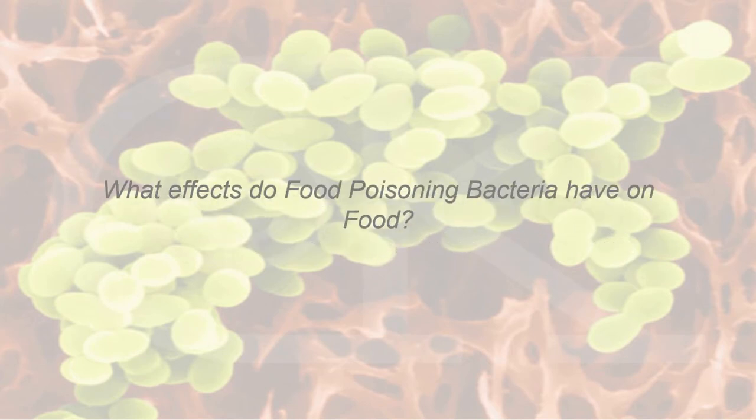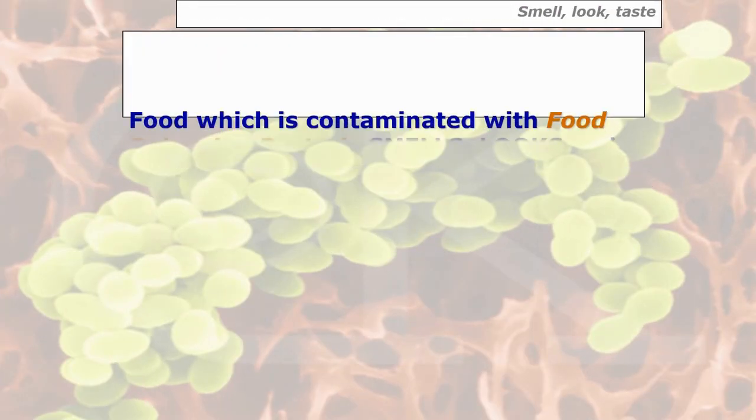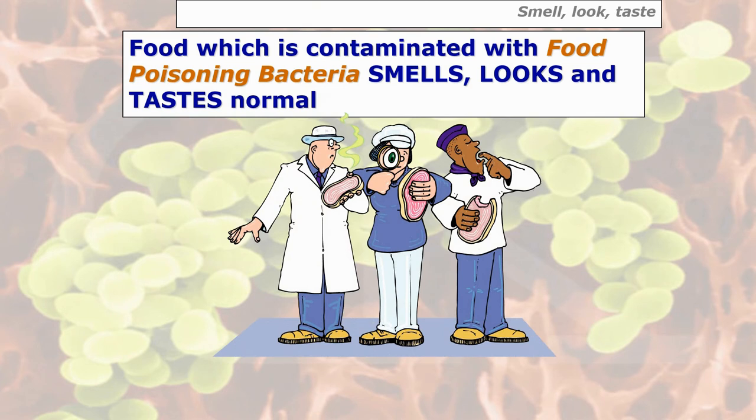What effects do food poisoning bacteria have on food? How do we know that food poisoning bacteria are there? Would there be a different smell, taste, or appearance? Well, food which is contaminated with food poisoning bacteria actually smells, looks and tastes completely normal. That's very important to remember. We simply don't know the bacteria are present because everything looks and smells normal.